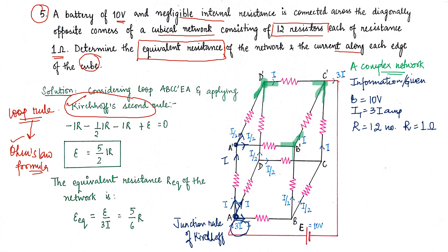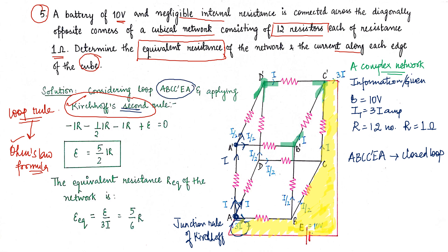To solve it, we consider one loop where we have a resistor, a battery, and known currents. This is the easiest loop to solve, and solving this single loop will give us the information needed to answer the question. The loop we are considering is A–E–C'–C–B, or equivalently A–B–C–C'–E–A. This is a closed loop, and we apply Kirchhoff's second rule in the clockwise direction.